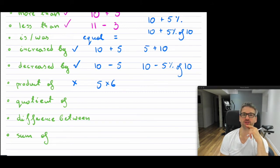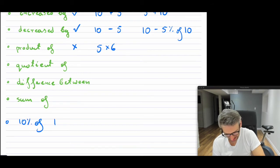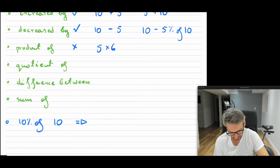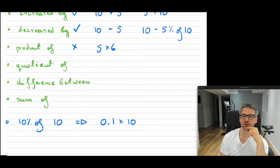Now, if you say "10% of 10," this is different. So if you say 10% of 10, that translates back to: 10% — we would typically write it as a decimal, 0.10 — of, which means multiply, by 10 because it's 10% of that number. Notice that "of" is basically a multiplication within here.